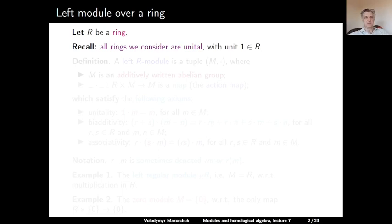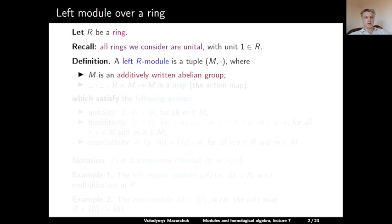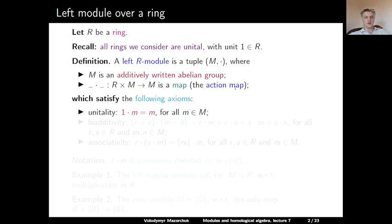Definition. A left module over R is a tuple which consists of an additively written abelian group M, and a map — usually denoted by dot — from the product of R and M to M, called the action map. This datum should satisfy the following axioms. First, the unitality axiom: 1 · m = m for any m in M. So the identity element of R acts as the identity map on M.